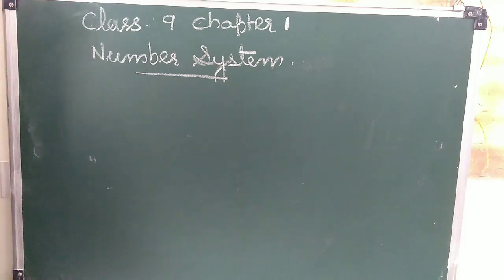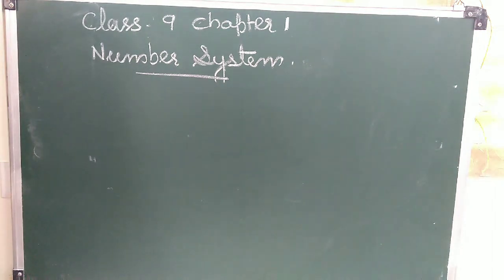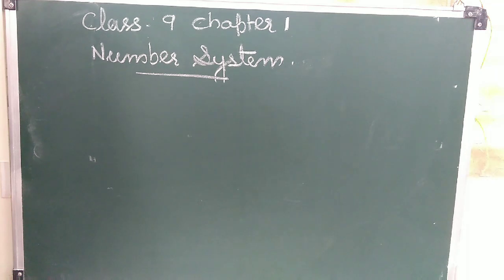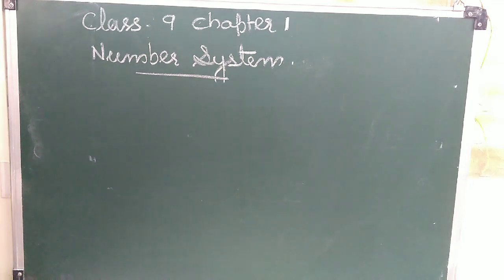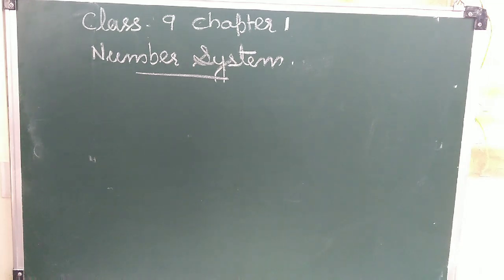Class 9, Chapter 1: Number System. When you want to be very clear and precise about something, you either name it or number it. For example, if you want a certain type of candy bar you will know its name and ask for it at the shop. Similarly, if you want a certain number of candies for you and six other friends, you will ask for seven candies. So numbers play a very important role in our daily life.